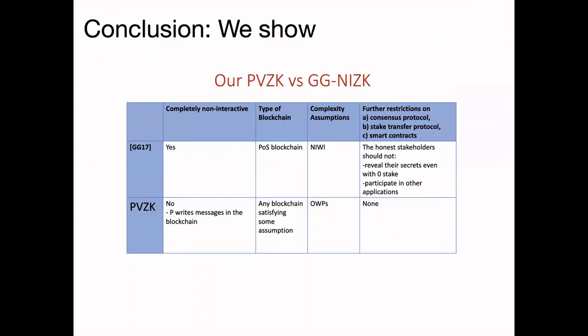In conclusion, comparing our work with Goyal and Goyal: we make no restrictions on stakeholder behavior or the consensus mechanism — we are generic as long as the blockchain satisfies our assumption. Our work can be based on one-way permutations. The limitation is that our prover is actually interacting with the blockchain, while the prover of Goyal and Goyal sends just one message to the verifier, making it completely non-interactive. That's all. Thanks a lot.